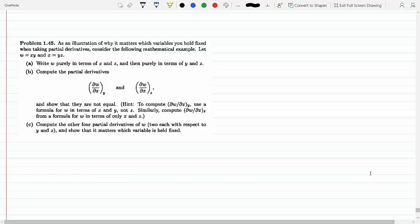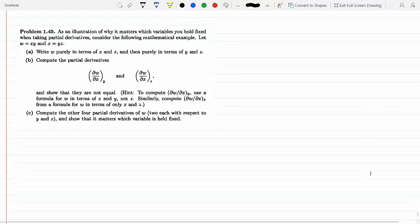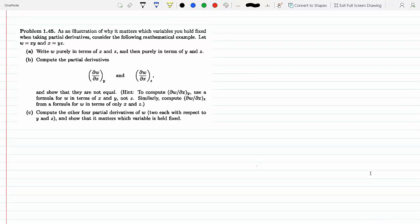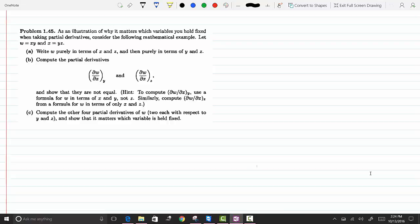Let's illustrate some of the properties of partial derivatives with the following problem. Let W equal XY, X equal YZ. Part A: write W purely in terms of X and Z, and then purely in terms of Y and Z.